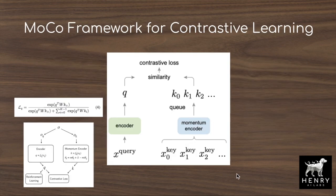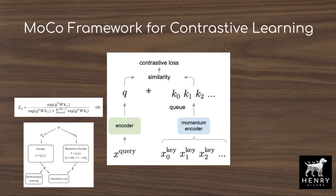The authors implement momentum contrastive learning as the auxiliary contrastive loss. A key idea of MoCo is that gradients only flow through the query neural network encoder. The key encoder is updated via a momentum update: taking a weighted combination of previous key encoder parameters and new query encoder parameters, with hyperparameter M as the momentum update term weighting the new step of parameters.